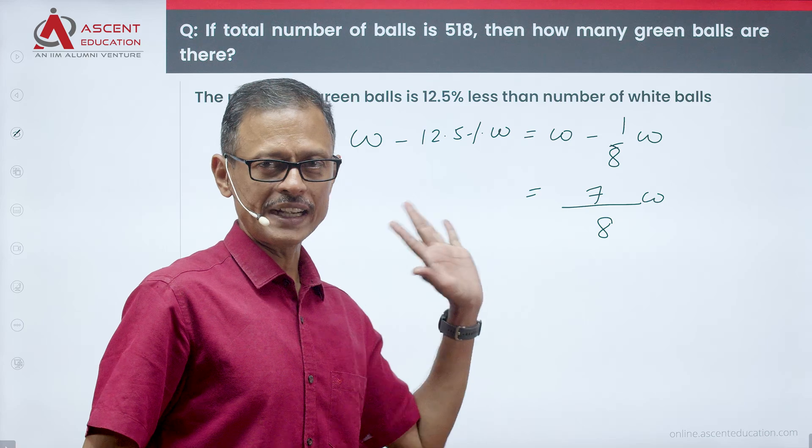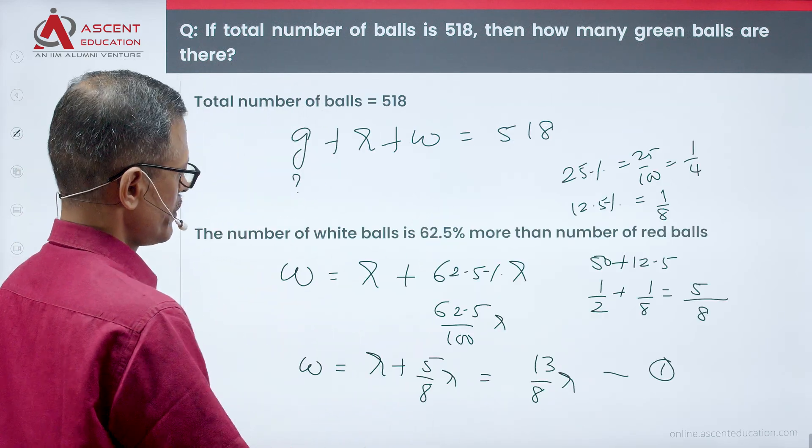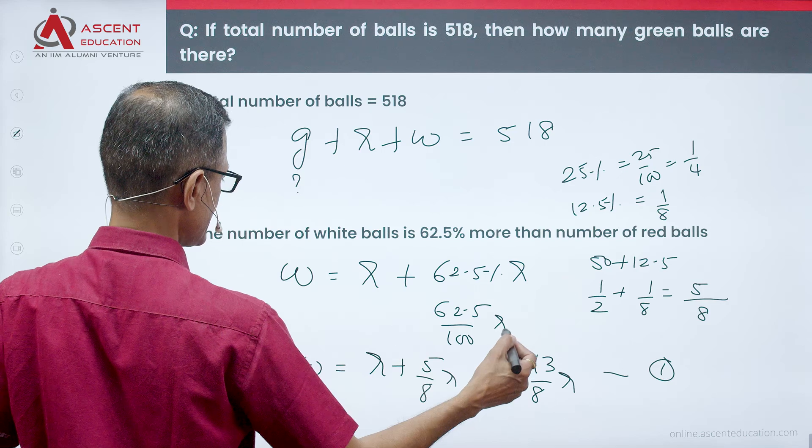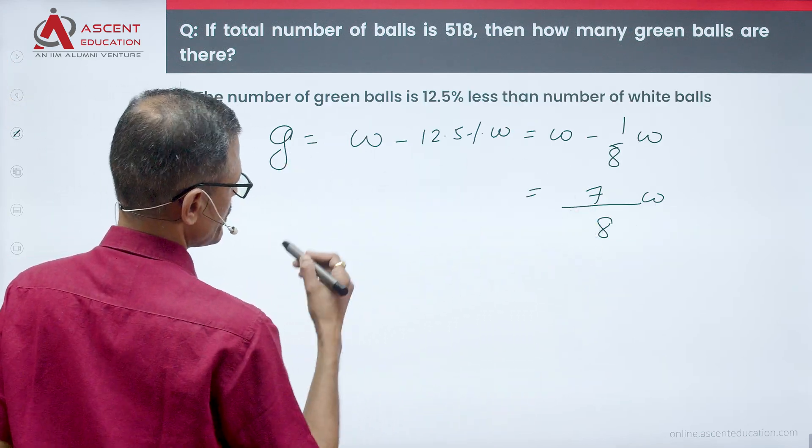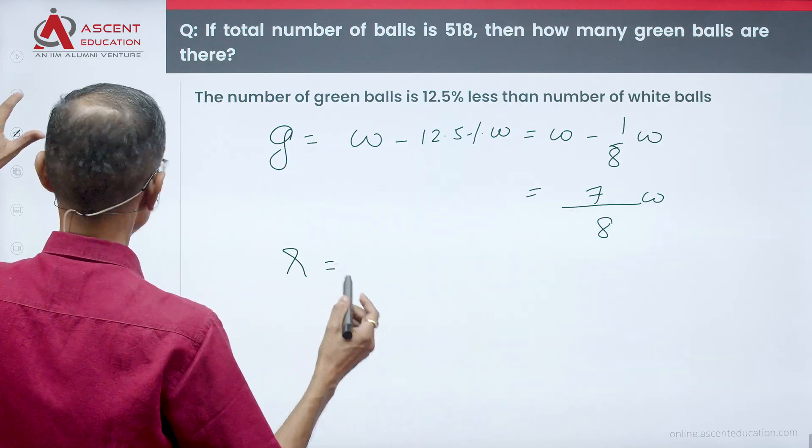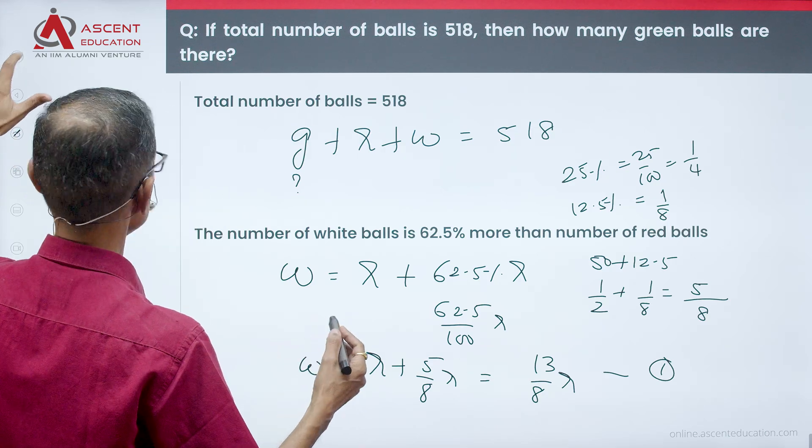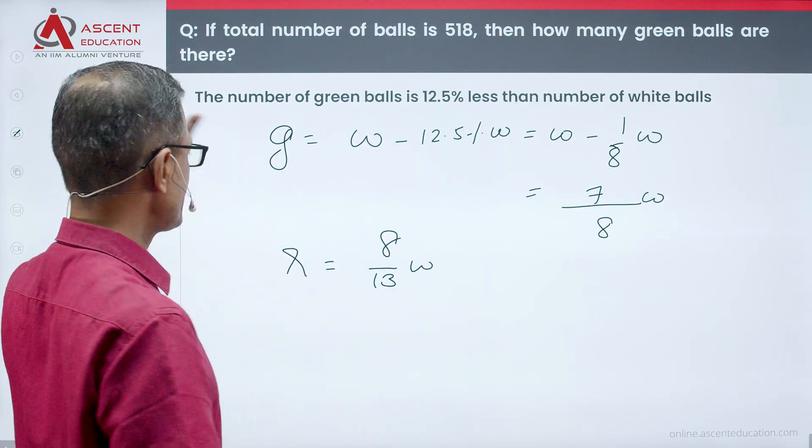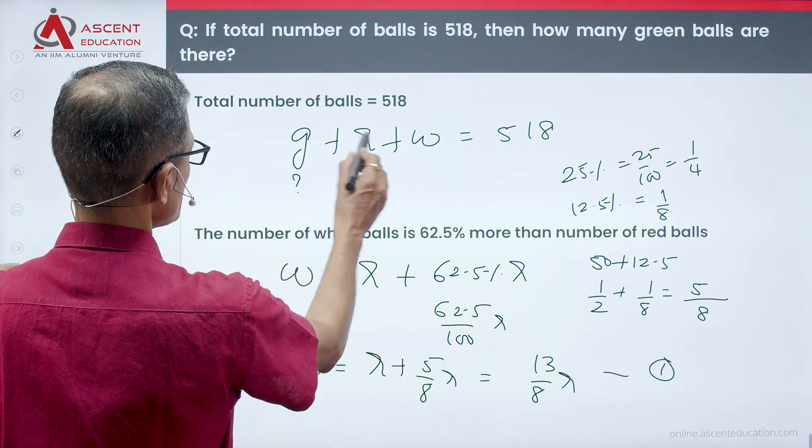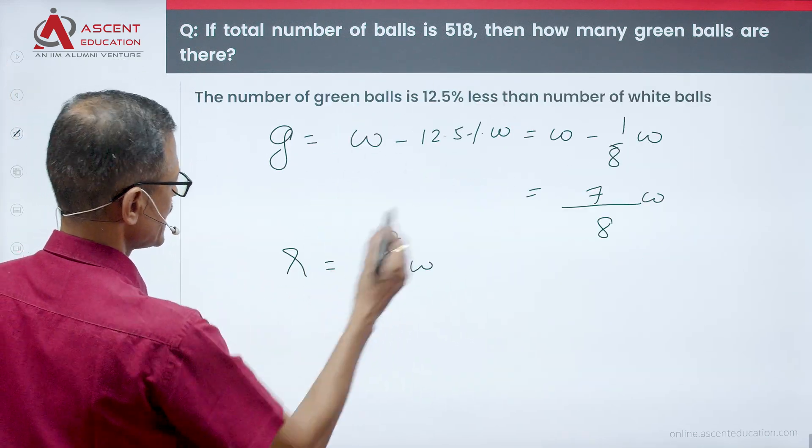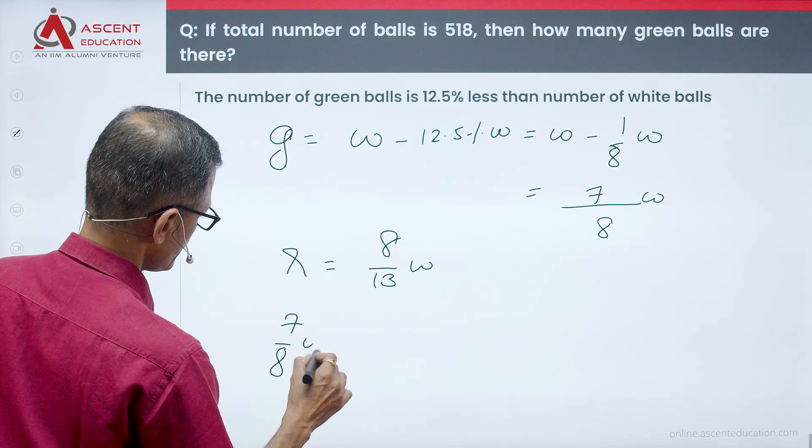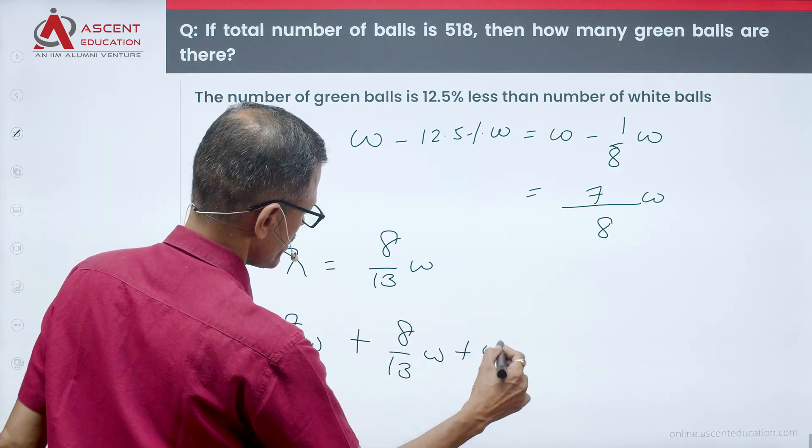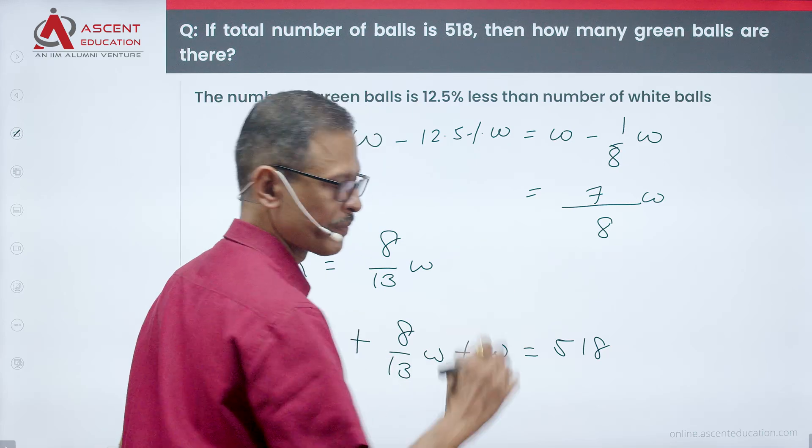We have got green in terms of white. We have got white in terms of red. If we cross-multiply, we will get R is equal to 8 by 13W. G is equal to 7 by 8W, R is equal to 8 by 13W. First equation: G plus R plus W is equal to 518.